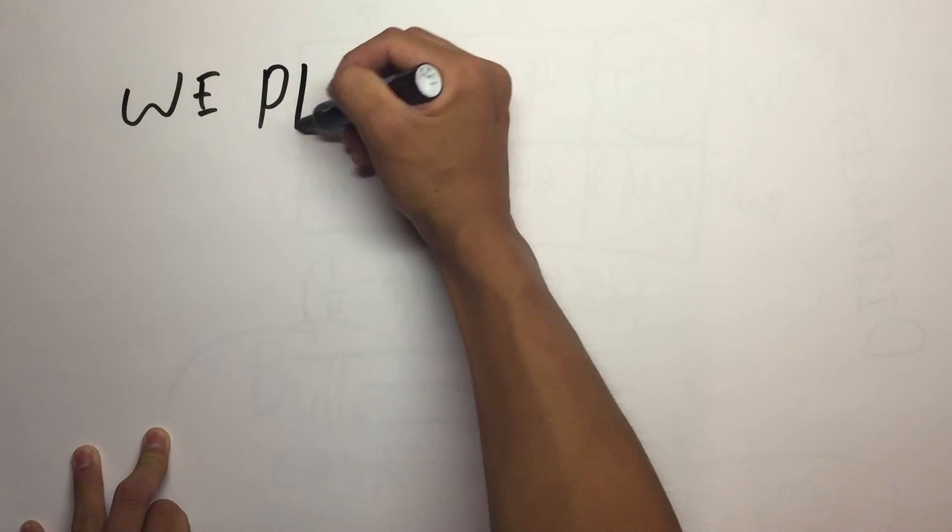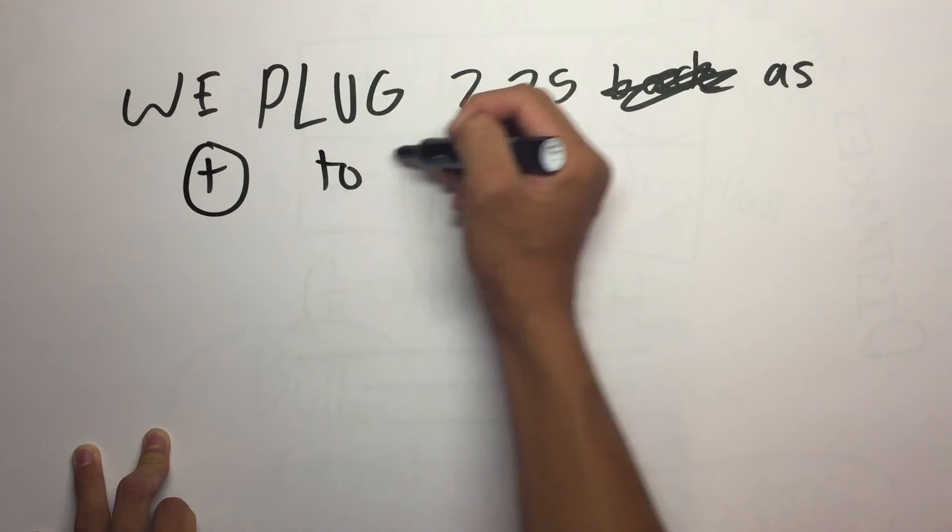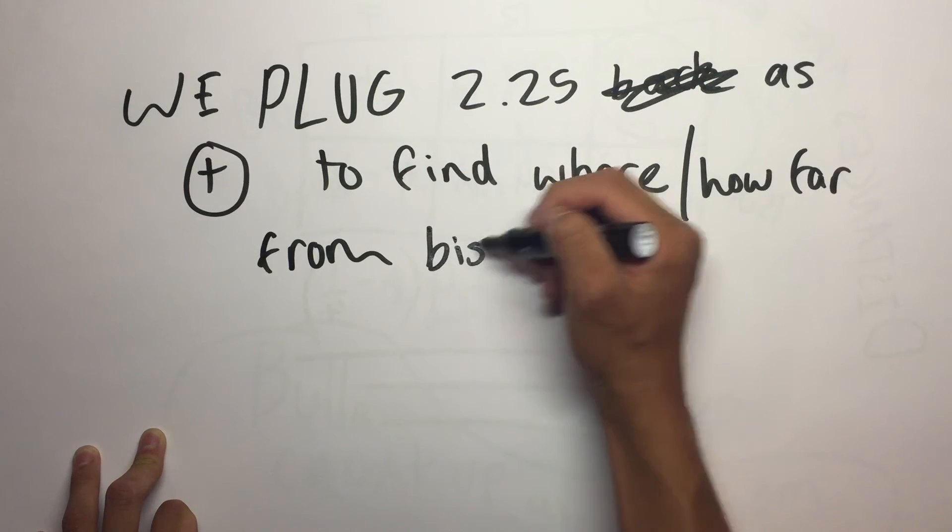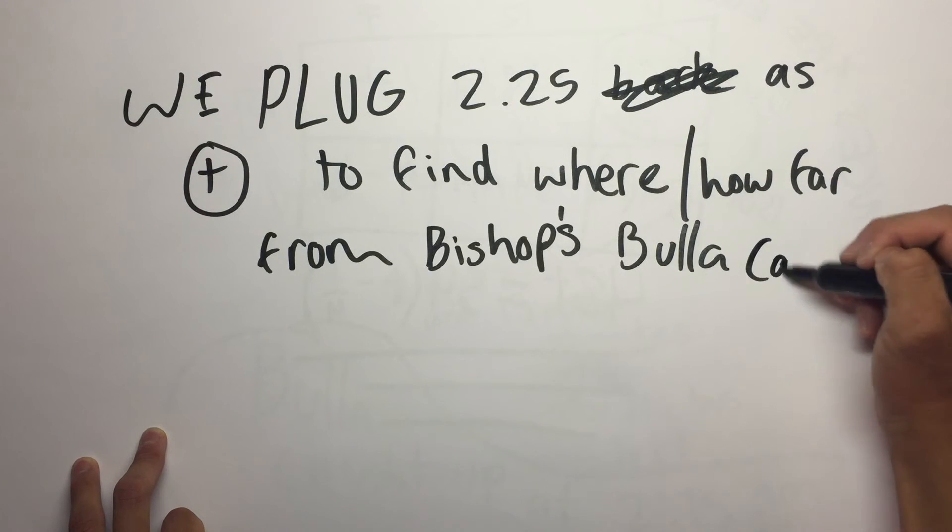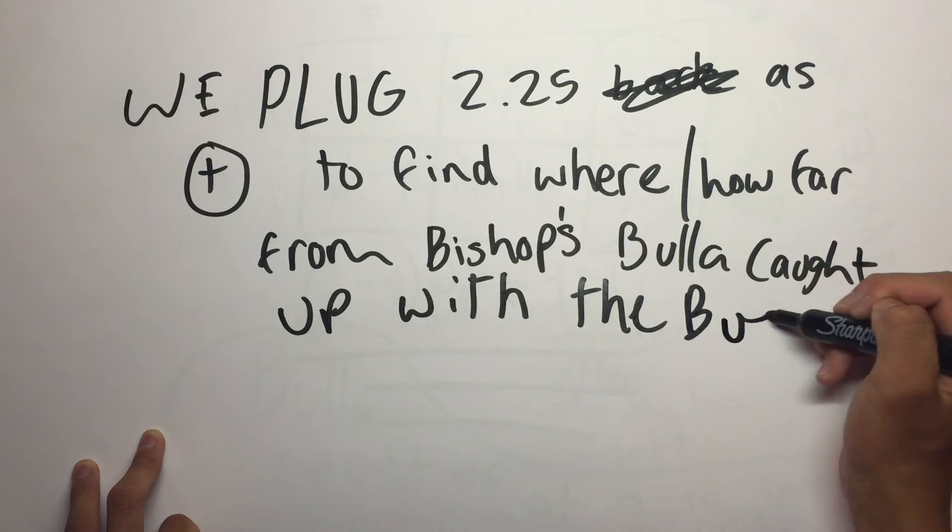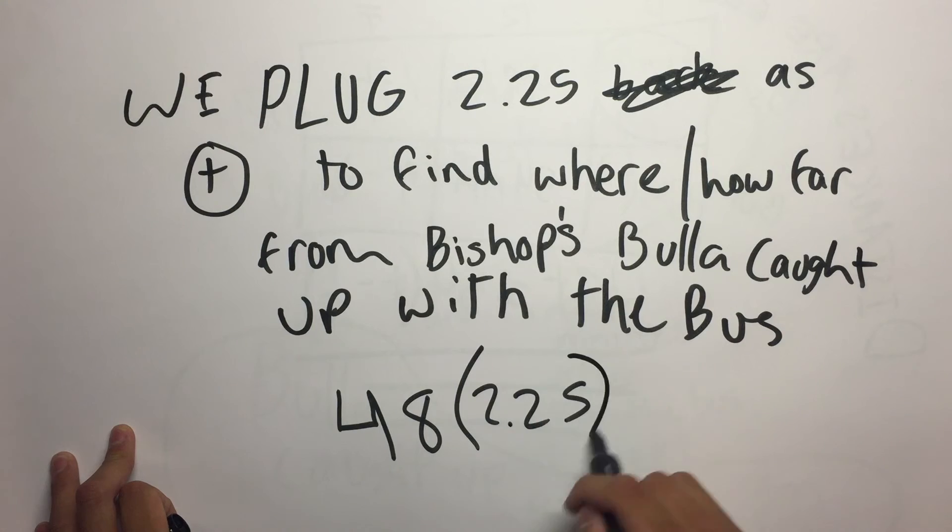Now we're going to plug back in 2.25 as T and put 48 times 2.25 and that equals 108.